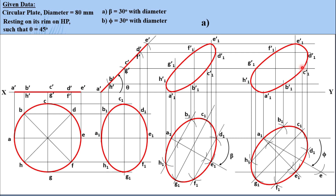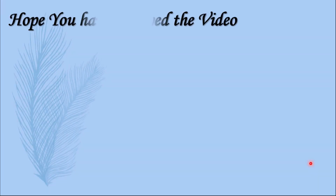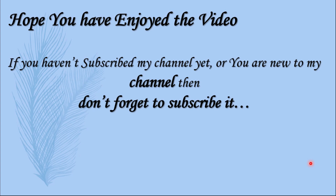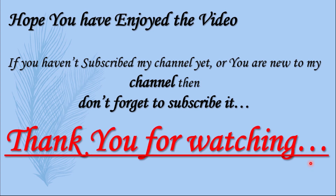For condition A, the first, second, and third steps are as shown. If condition B is mentioned instead, the first and second stages remain the same, and for the third stage you directly draw condition B. By side-by-side comparison you can see that in condition A beta is 30 degrees, while in condition B beta is more than 30 degrees because phi is 30 degrees. Hope you enjoyed the video. Please subscribe, like, and share with your friends. Thank you for watching.